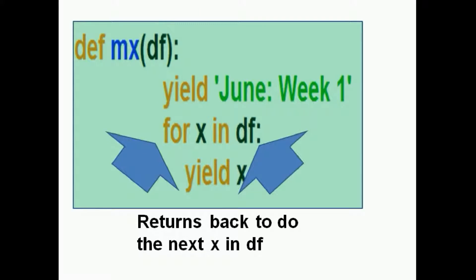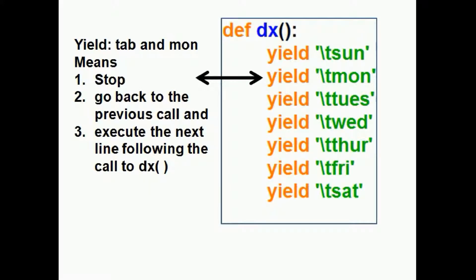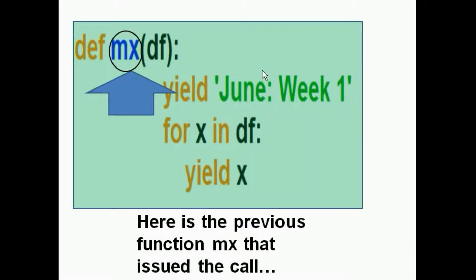Well, he comes back, he turns back to do the next F in DF. He goes down to the line following the yield. There is none. He loops back over to here. Here's the next line to execute. He goes back to do the next X in the DF variable that contains the DX function name. So he goes there. And he goes to the next line, which is yield, slash T, Monday.